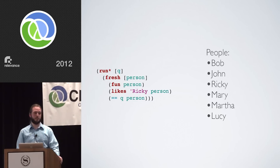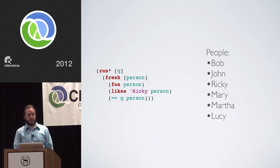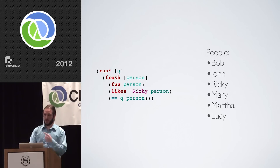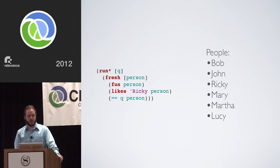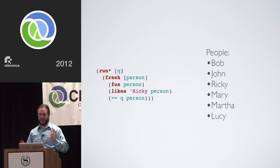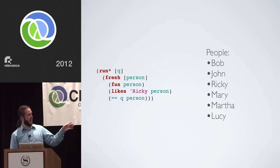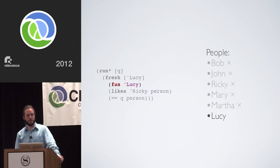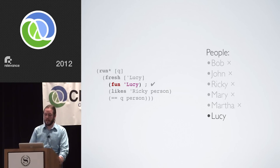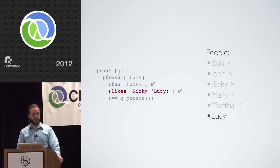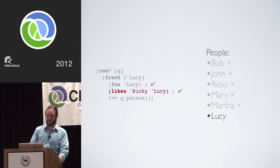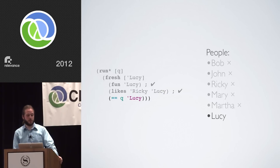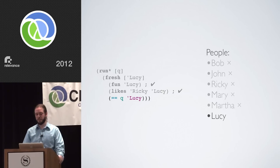Let's take a grossly oversimplified view. Under the covers, core.logic keeps what's called a substitution map that associates fresh variables with actual values and sees if everything works out in the end. Lucy is the candidate — is she fun? Yes. Is she liked by Ricky? Yes. Since she passed through both those phases, q, having been bound to nothing else as part of this run, is still fresh and available to be bound. So Lucy comes out as the only answer to this puzzle.